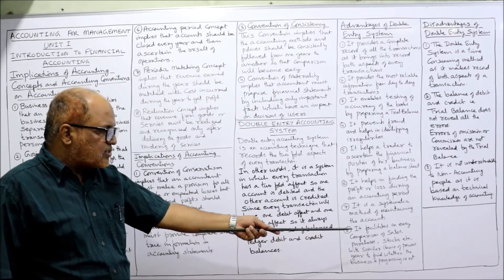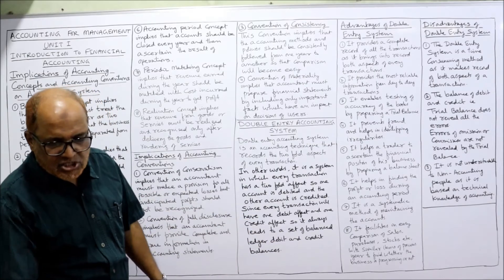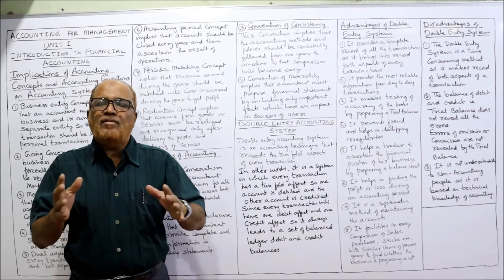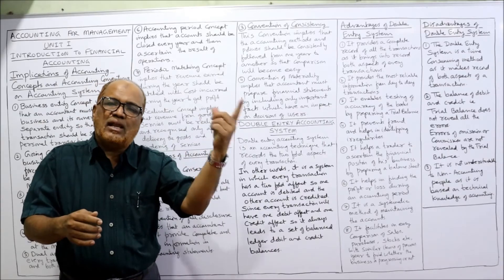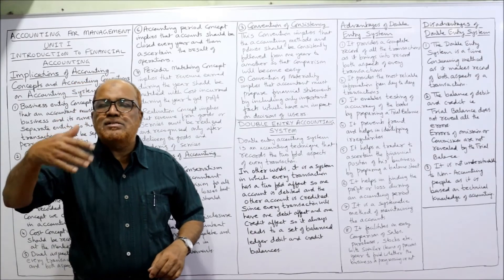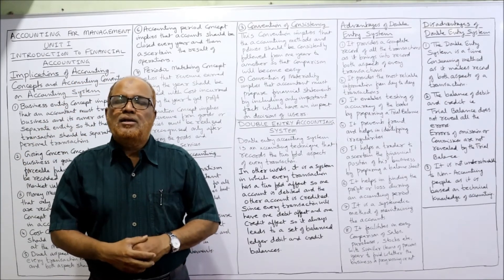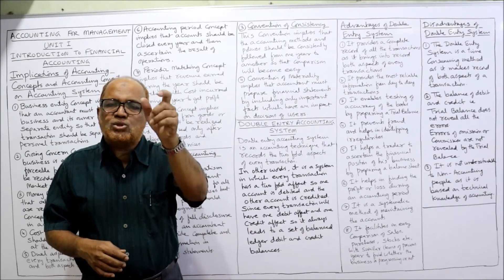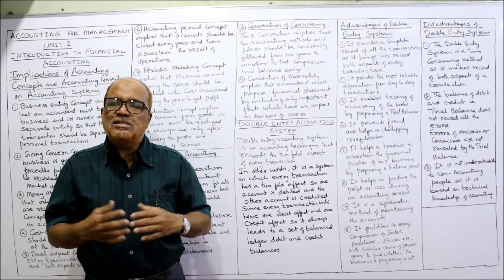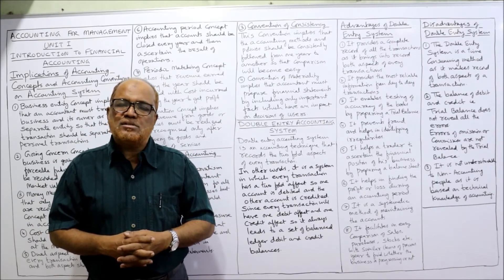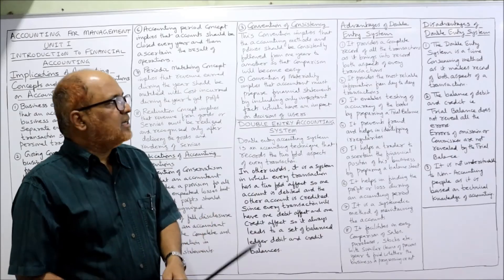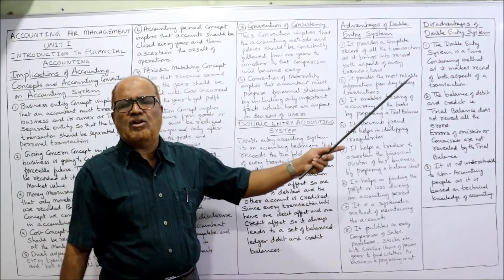It also facilitates easy comparison of sales, purchases, stock, and other items with similar items of previous years, to find out whether the business is progressing. Comparison is necessary for every business — comparing the performance of the current year with the last year. We have totals of purchases, sales, stock, and profit for every year, so we can easily judge the profitability of the business. These are the advantages of the double entry system.